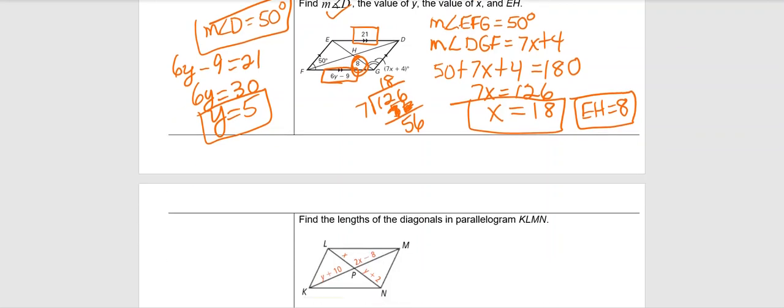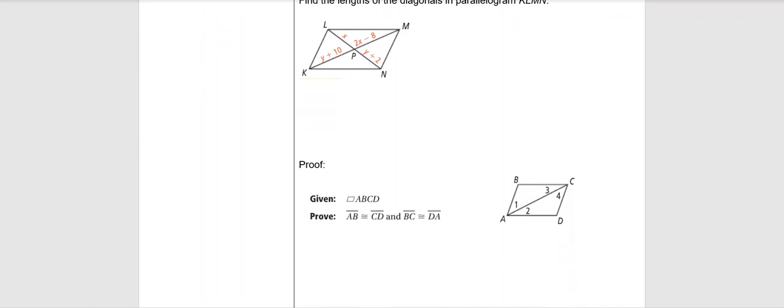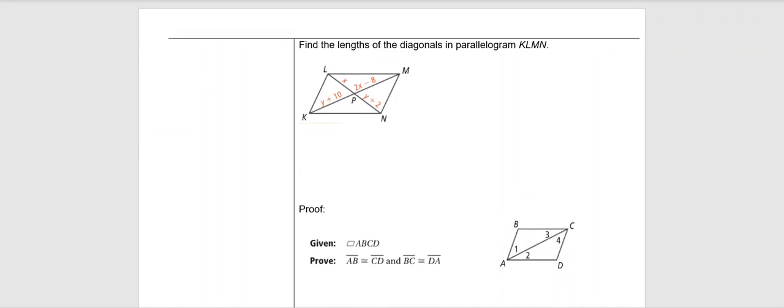Let's do this one. I would stop you here and ask you to do this one, but this one requires a system of equations, so I'm going to help you do it. We want to find the lengths of the diagonals. Let's look at diagonal LN. They do tell us this is a parallelogram, so we know that those two diagonals bisect each other. So we know that X equals Y plus 2. And if we look at diagonal KM, we know that Y plus 10 equals 2X minus 8.